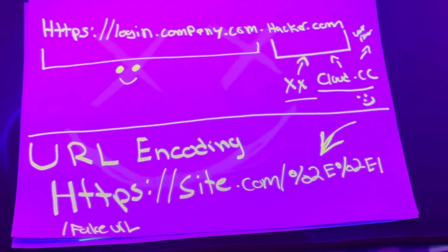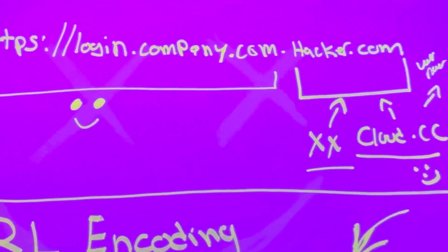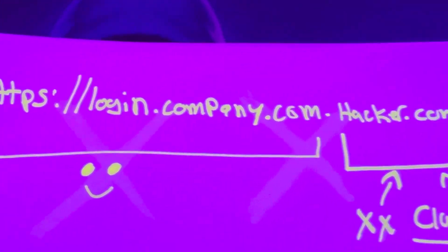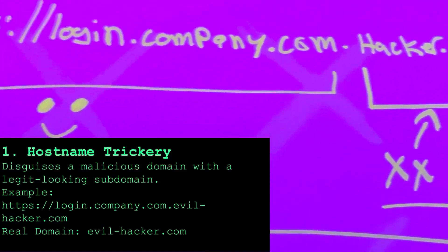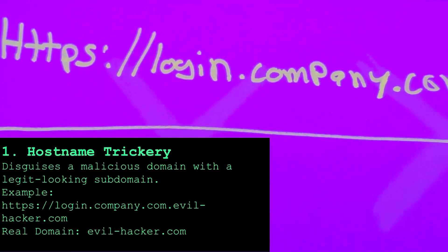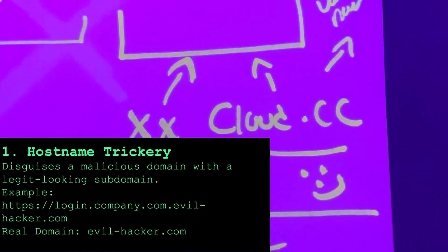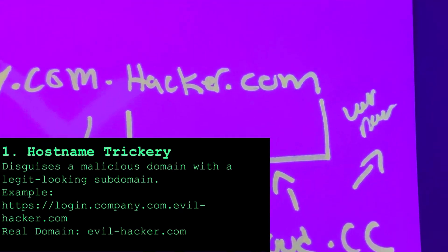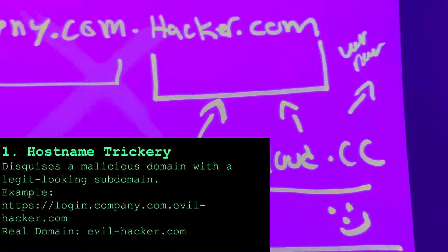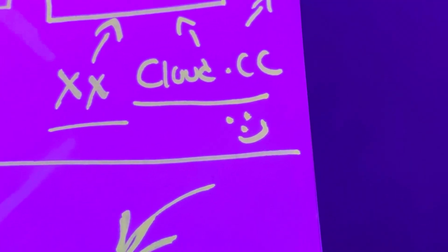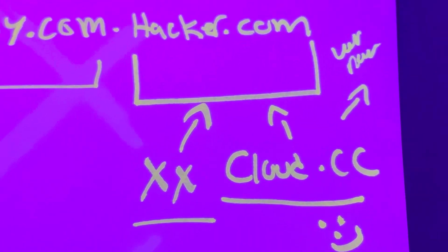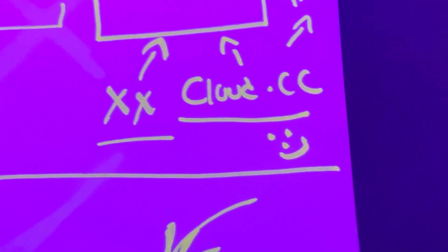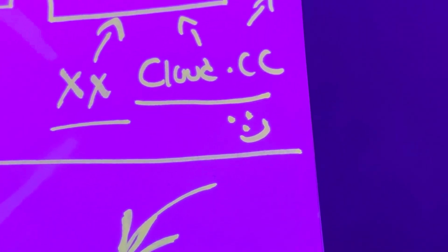There are multiple techniques when it comes to URL obfuscation. The first part of this URL looks okay — login.company.com — but the last part, .hacker.com, is malicious, so it will direct you to a bad site. Even though the first part looks good, that bad part is right there at the end. Some bad actors use legitimate hosting platforms like cloud.cc or something similar. Since it's coming from a trusted domain, the antivirus won't get tripped. This is only gathering your credentials — it's not installing anything. Once you find those hidden domains, block them from all your users so they can never access them again.